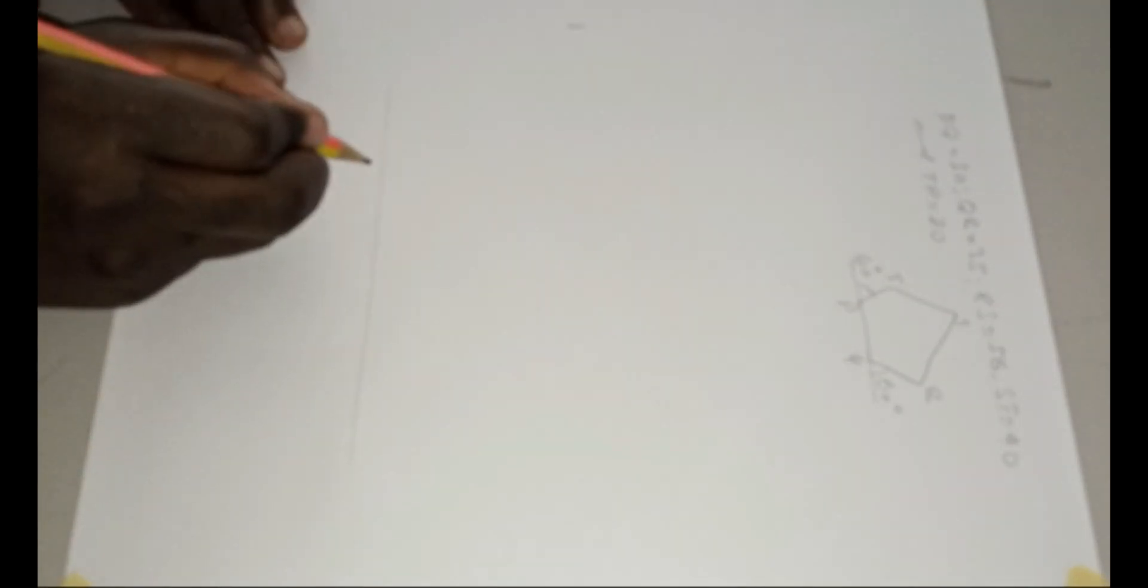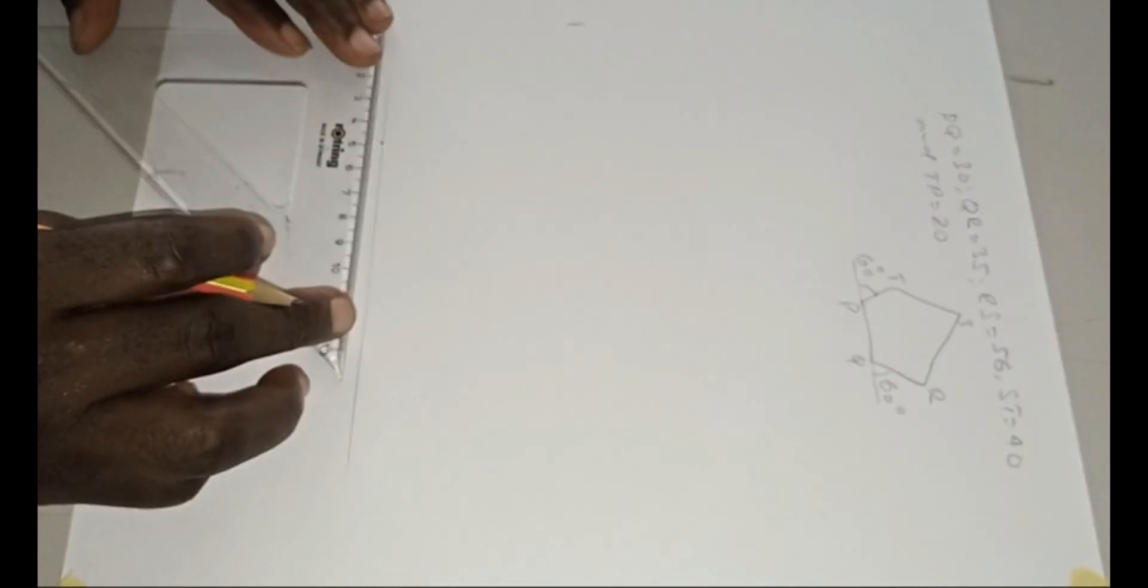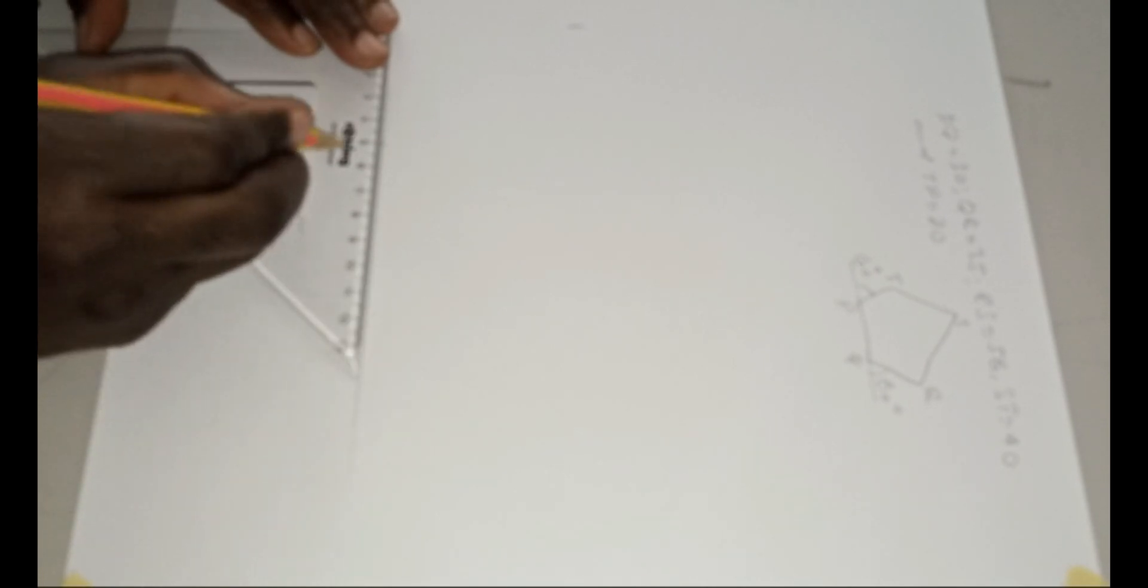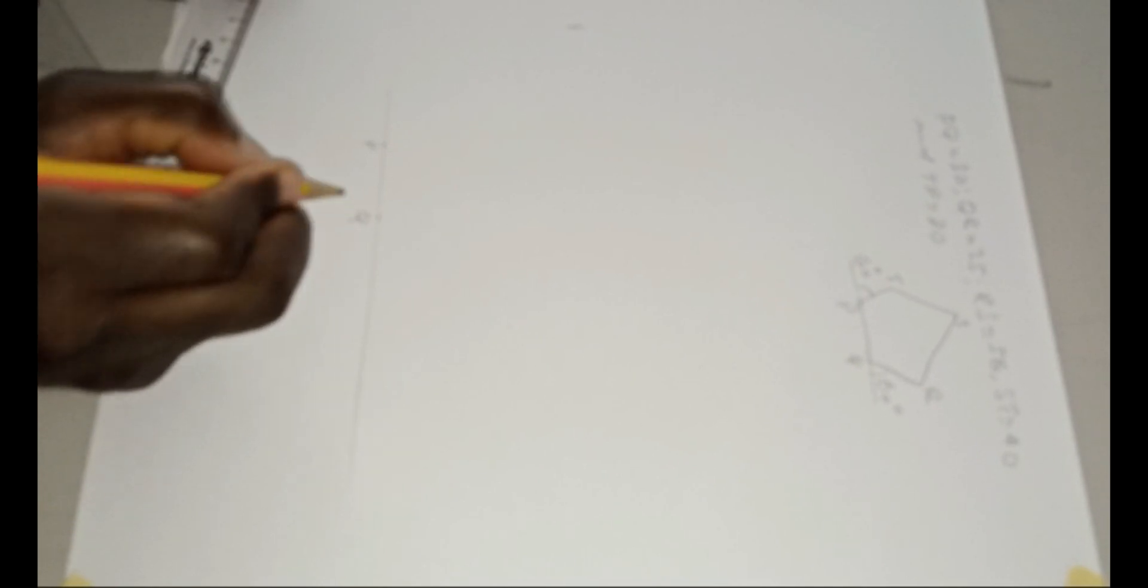Now we start. Let us locate, let's say this point is our point P. And our PQ according to the question is 30. So you measure 30: 10, 20, 30. So this is P and this is Q.